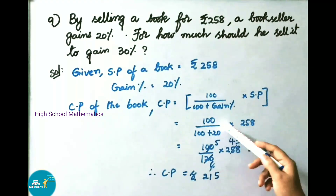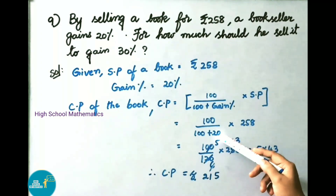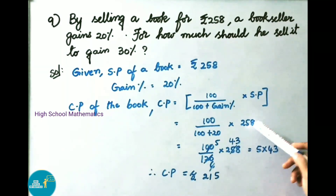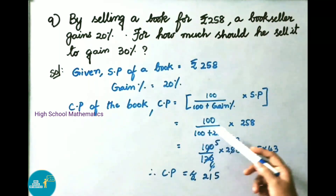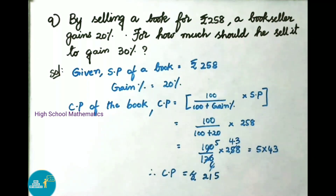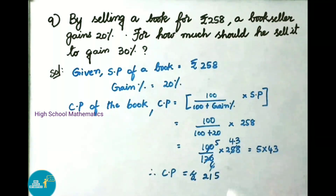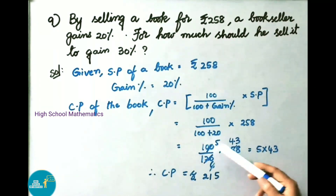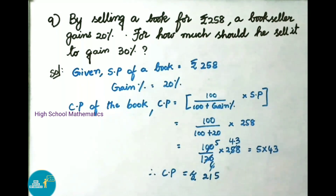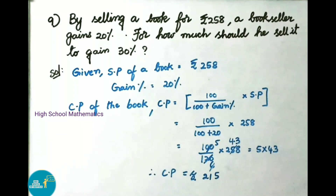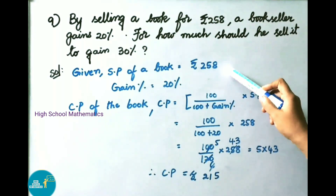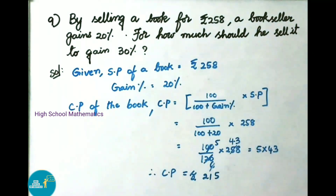Cost price equals 100 by (100 plus 20) into 258, that is 100 by 120 into 258. Simplifying: 20 table 5 times 100, 6 times 120, so 100 by 120 reduces to 5 by 6, then 5 by 6 into 258 reduces to 5 by 1 into 43, giving 215 rupees. Therefore cost price of book is 215 rupees.